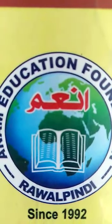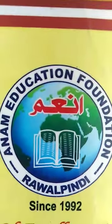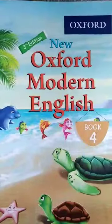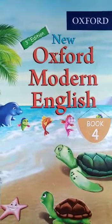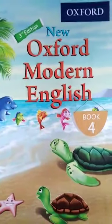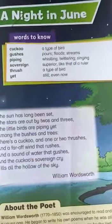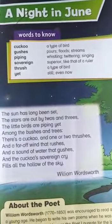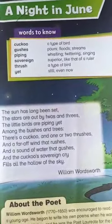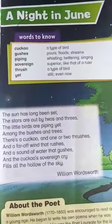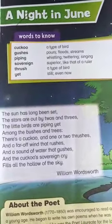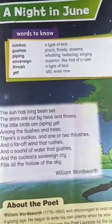Assalamu alaikum dear students, how are you all? I hope you are very fine. As we have already started our studies with the new Oxford Modern English for Grade Four, we have done unit number one which was Pippi Longstocking — that was a story. Now we are going to start with a poem that is 'A Night in June'.